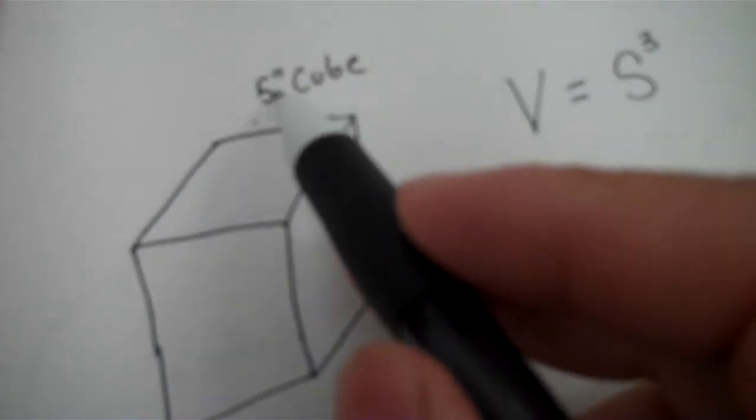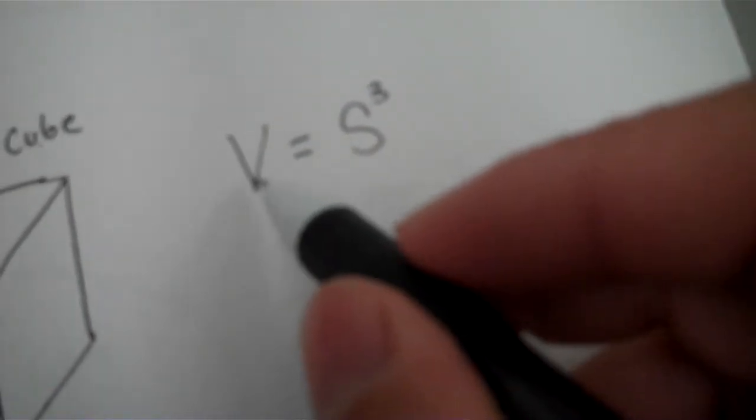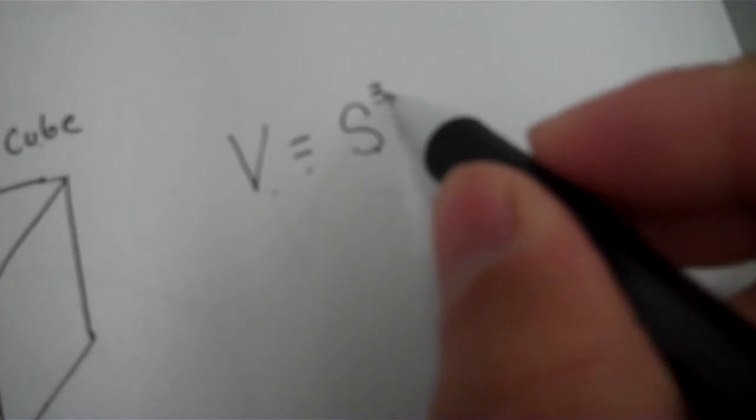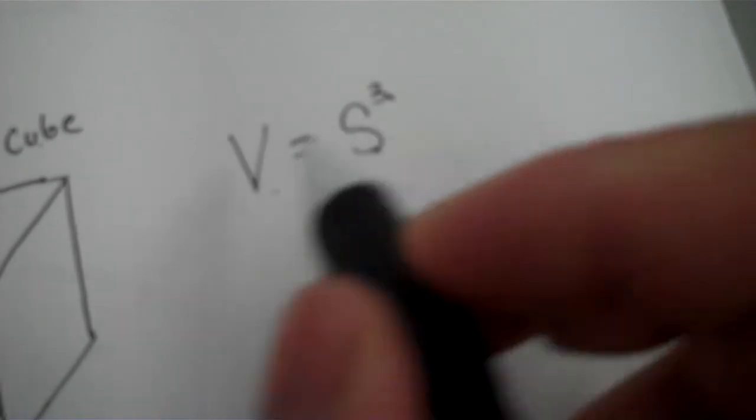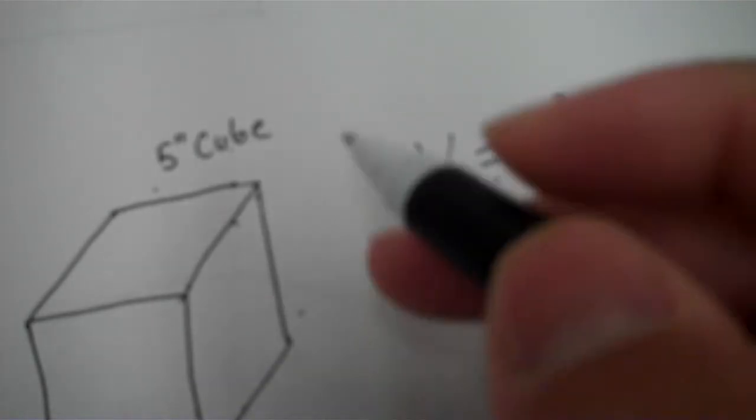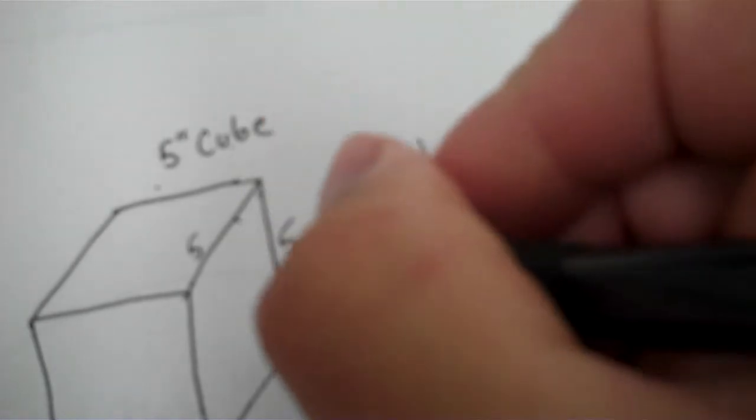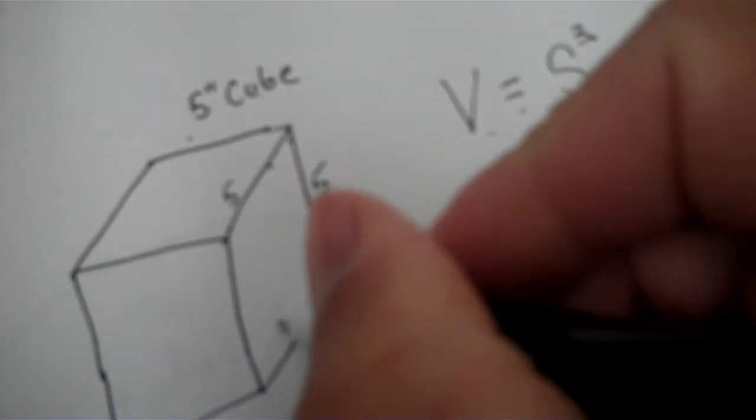Cube. And the formula is V equals side cubed. What it's saying is S is each side of this, each leg of this is five inches. This is five, this leg's five, this leg's five, and so on.